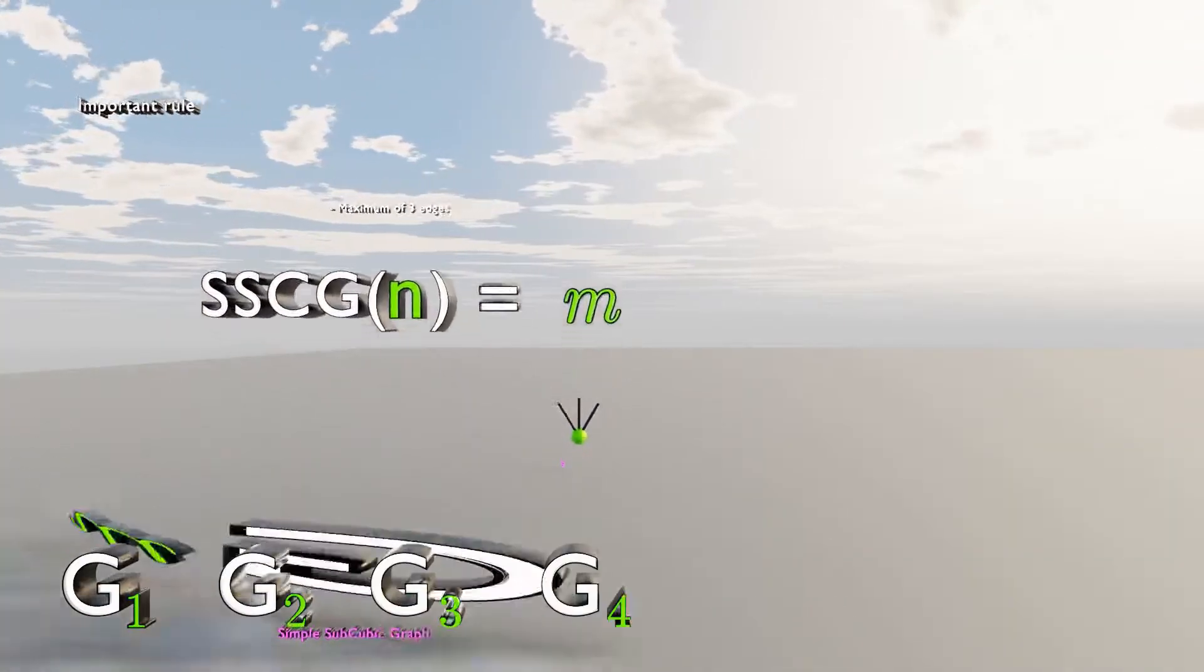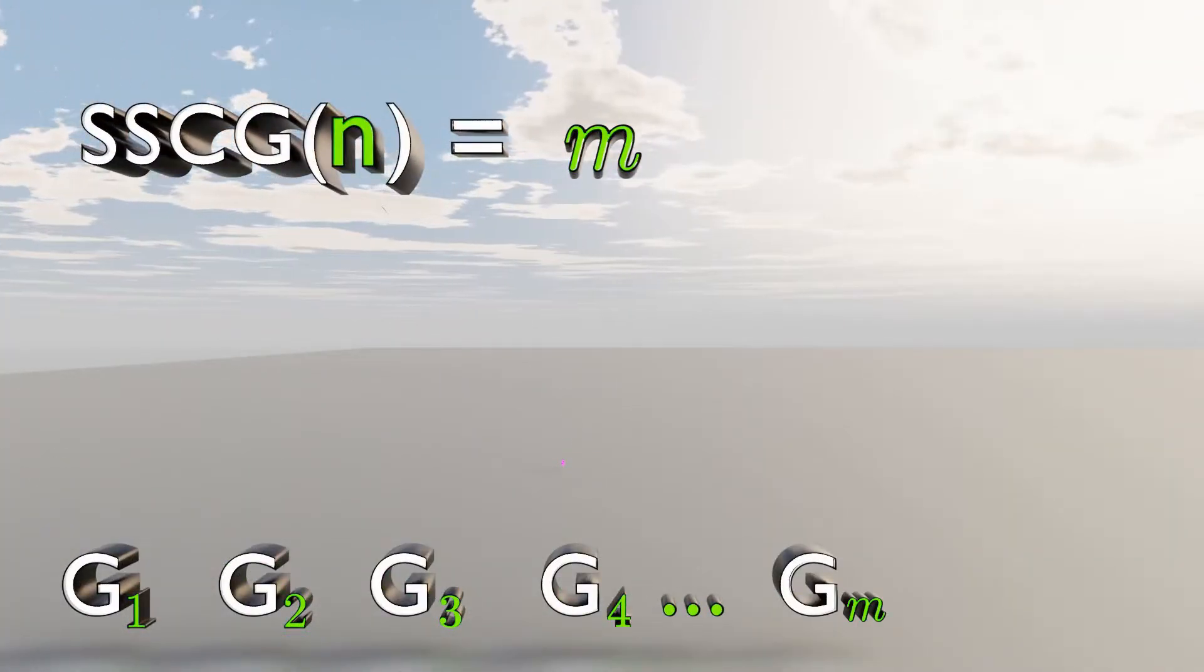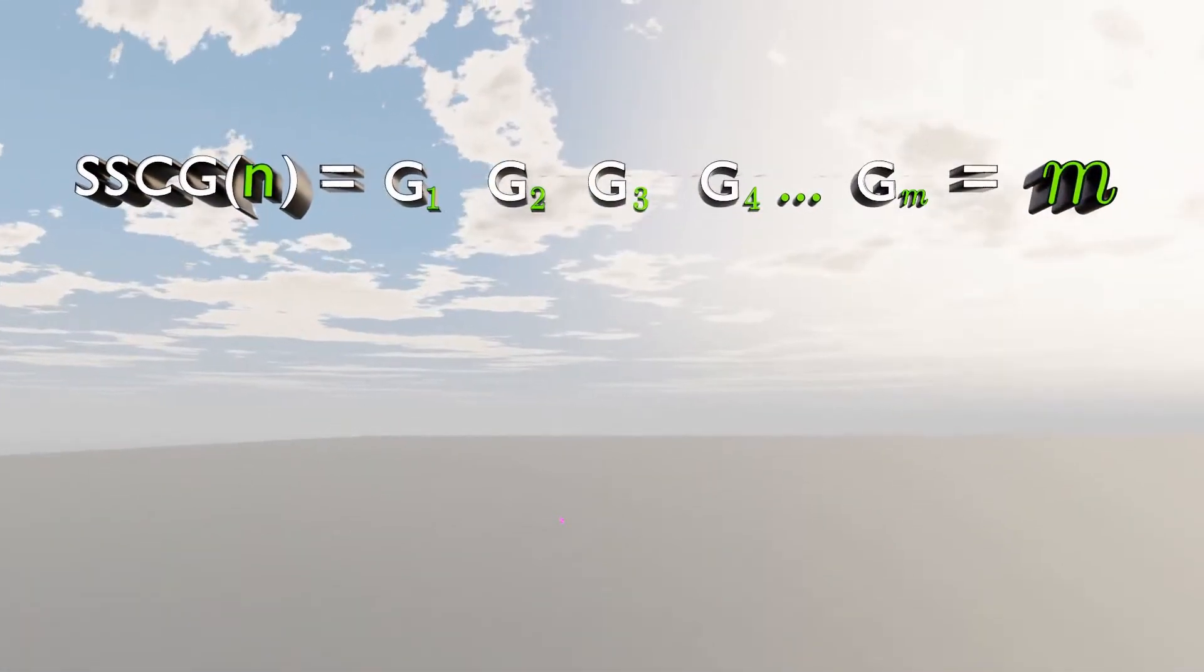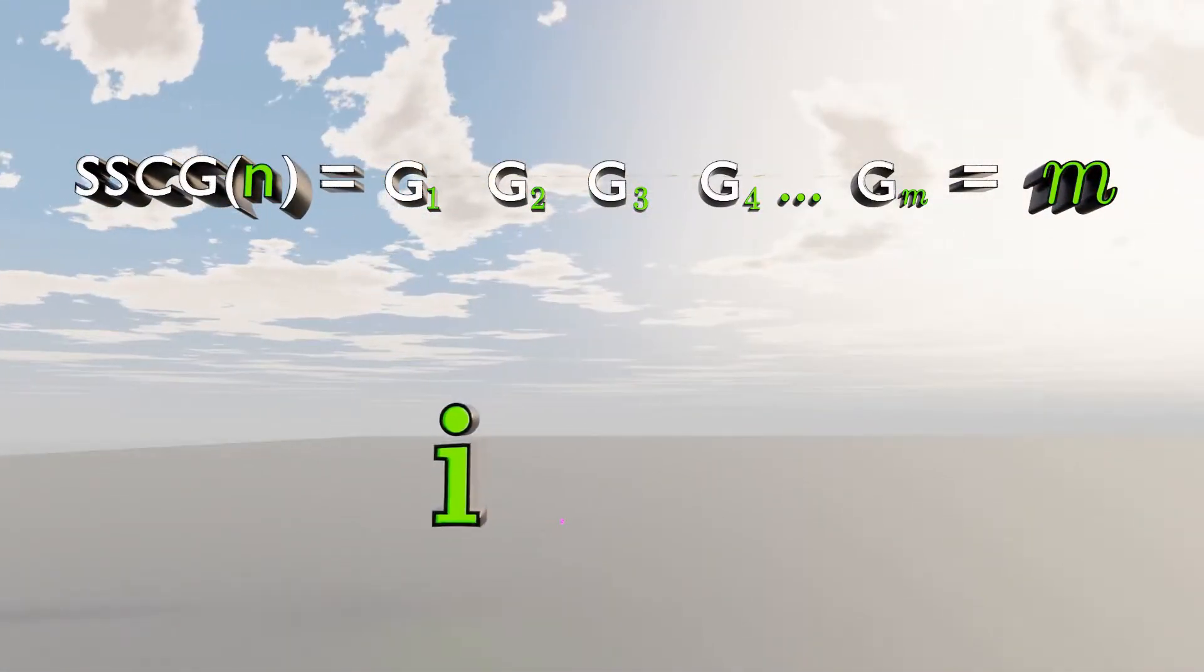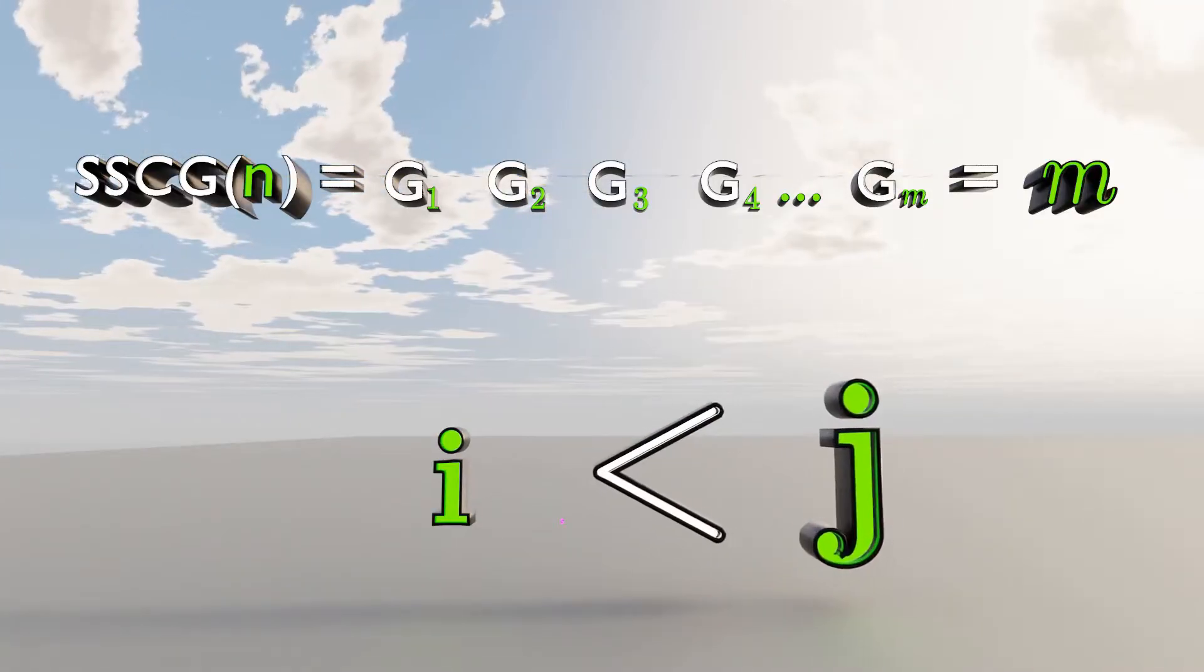Let's get back to SSCGN. Let's say we have a number I, which is less than number J.